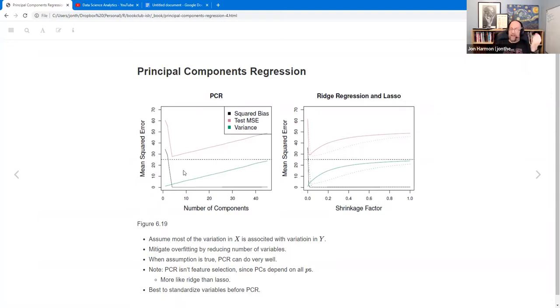And you mitigate the overfitting by reducing the number of variables. Again, I've kind of corrected myself to catch this a few times that it's not feature selection because every of the components depend on all the other variables. Now, some variables matter more in a given component, but it is a combination of the variables to make each component. And so it's more like the Ridge than the Lasso. And another note that they make is that it's a good idea to standardize your variables before you do PCR, because if you have one variable that varies by millions, that's going to dominate all of your principal components. So you want to make sure that they're all on the same or roughly the same range.